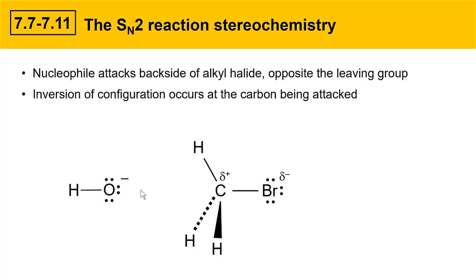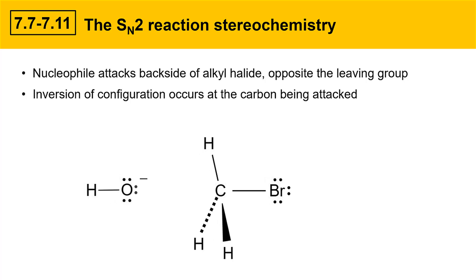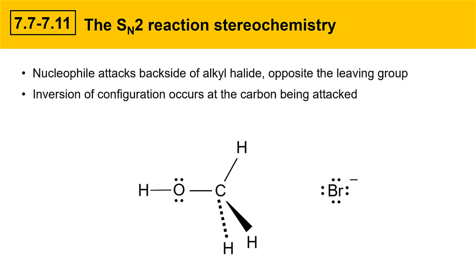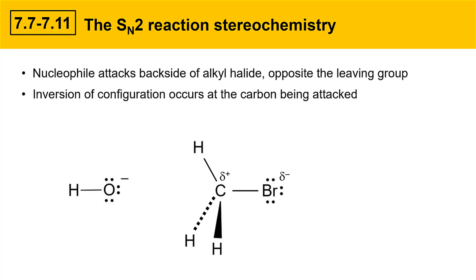The result of all this is that inversion of configuration occurs at the carbon that's being attacked. The carbon here is getting its configuration flipped. We'll watch a video here to show what that looks like, and then discuss it. So the nucleophile comes in from the backside and displaces the leaving group.